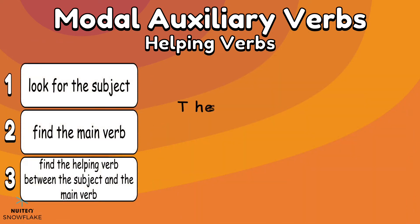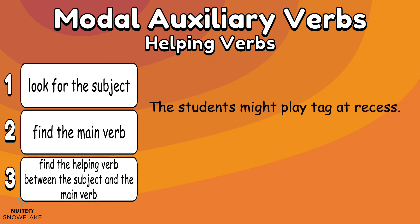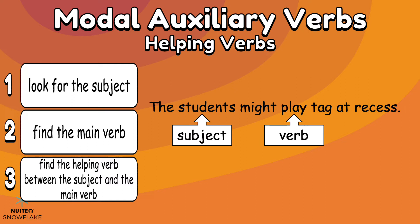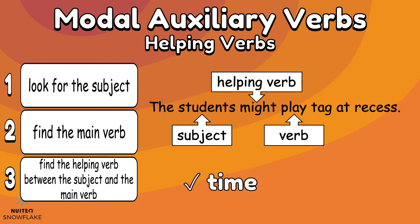For example: The students might play tag at recess. First, find the subject — the students are the subject. Next, which word is the main verb? The word play is our action, it is the main verb. In between the subject and the verb we can find the helping verb. Might is the helping verb. It is telling the reader that the action has not yet happened. It also sets the tone — do we know if the students will play tag? We don't know, so the tone is uncertain.